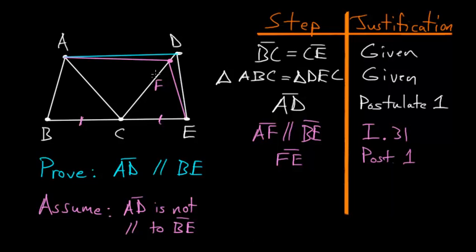And we know because of Book 1, Proposition number 38, that these two triangles are equal to each other. So let's write that: triangle ABC is equal to triangle FEC. But we already know that triangle ABC is equal to triangle DEC.